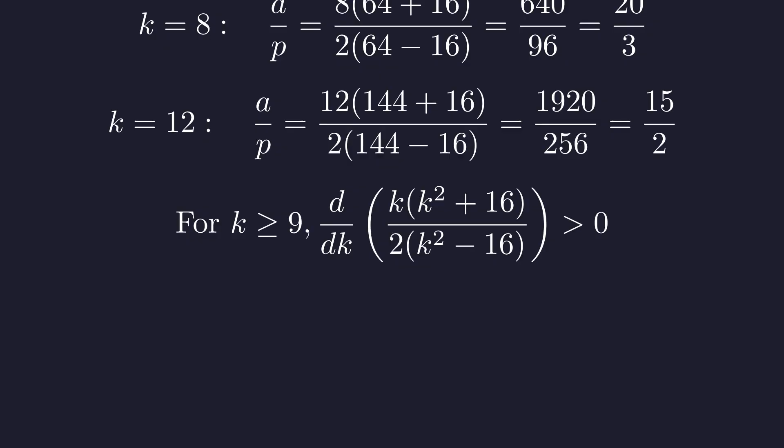But do we need to keep checking? Here's the key insight. This function has a minimum around k equals 8.2, then increases for k greater than or equal to 9. Since we've already found solutions at k equals 6, 8, and 12, and the function grows for larger k, it becomes impossible to get these small prime denominators we need.